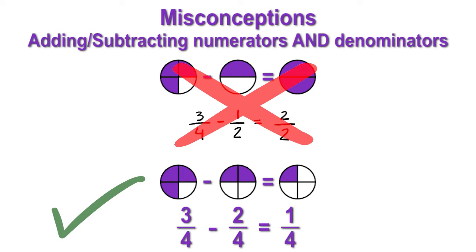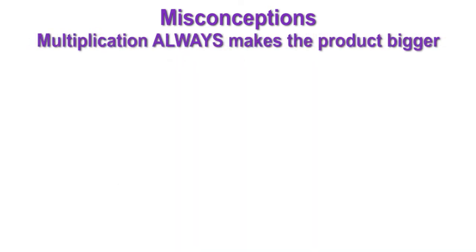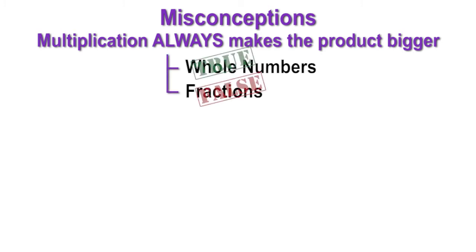Another misconception that can occur is the idea that multiplying any two numbers results in a larger number. This is not the case with fractions. In fact, it is the exact opposite. For example, one half times three fourths equals three eighths.